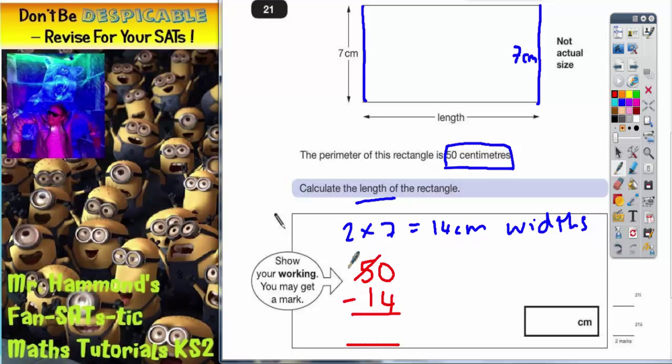Zero take away 4 we can't do. So we borrow one. One that I borrowed makes 10. 10 take away 4 is 6 and 4 take away 1 is 3. So we've got to have 36 centimeters left for the two lengths.